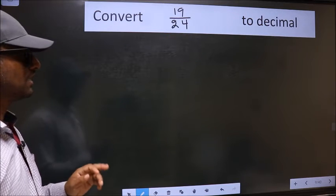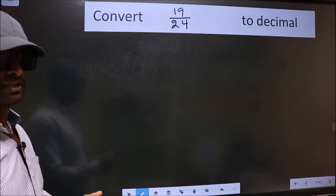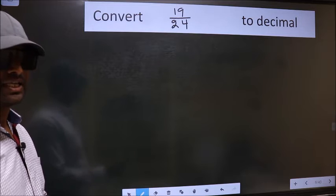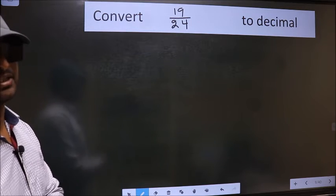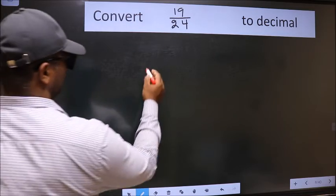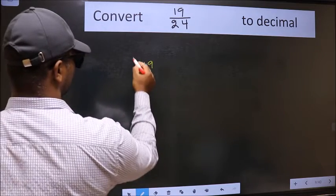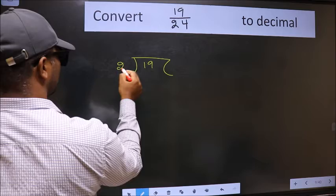Convert 19 by 24 to decimal. To convert to decimal we have to divide, and to divide we should frame it in this way: 19 here, 24 here.